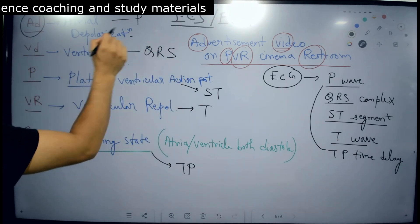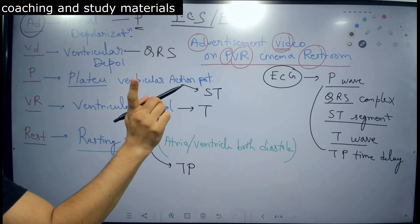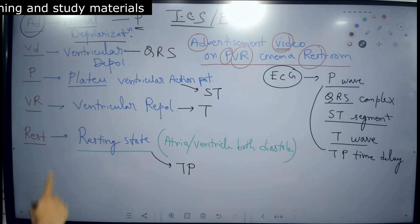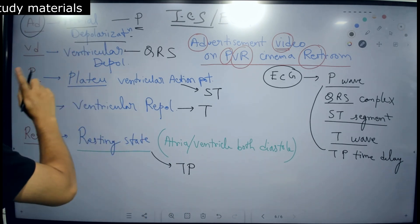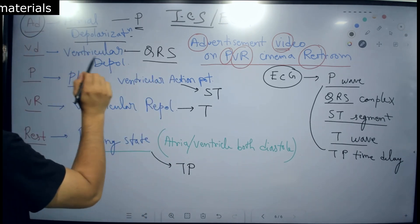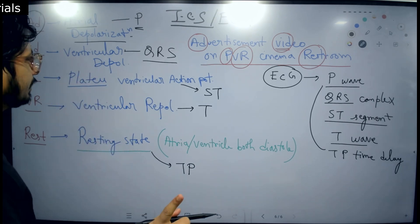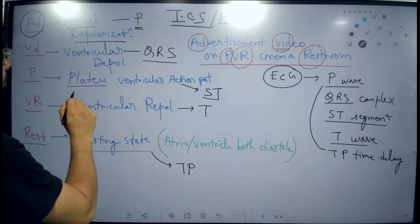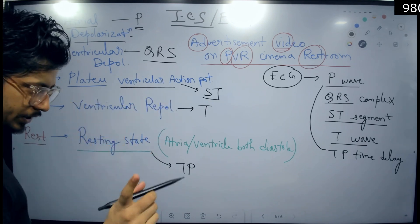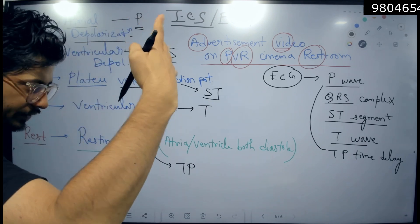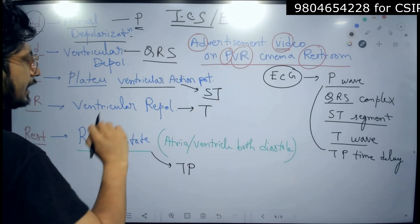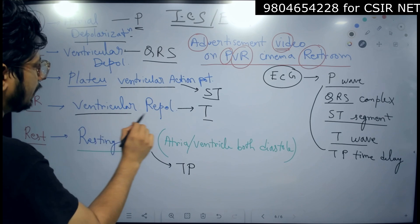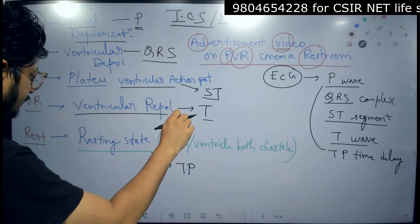So, AD and P. So, P wave represents atrial depolarization. Clear? Now, you see how I am connecting it. Next one. QRS complex denoting ventricular depolarization. ST segment denotes plateau of the ventricular action potential. Should be reached naturally. If it is not reached, if it is elevated, then that denotes myocardial infarction. Then we have T wave ventricular repolarization denoted by T wave.